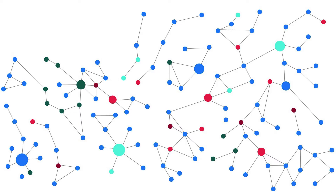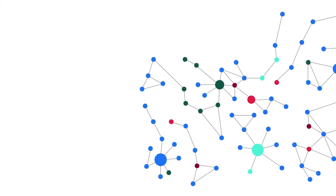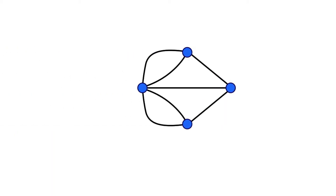Nodes are the circles in a graph and typically represent objects, entities, or things. Recall that in the previous lesson, the land masses in the bridges of Konigsberg were represented by nodes.